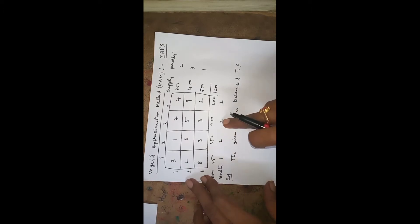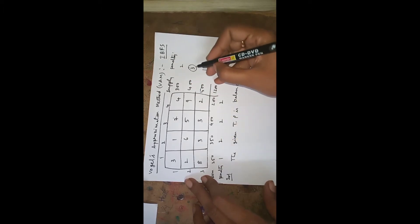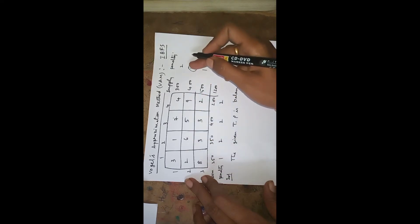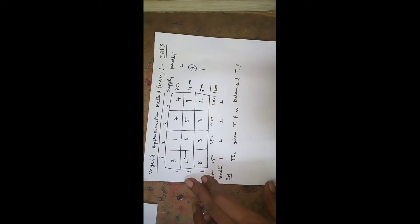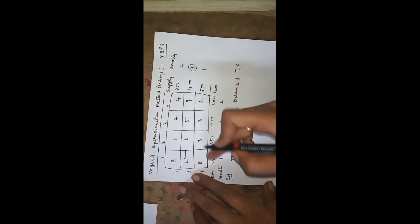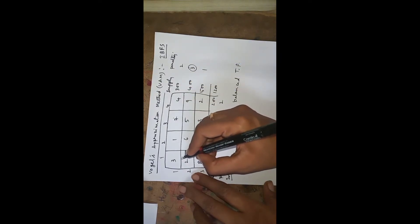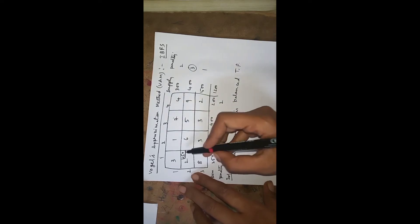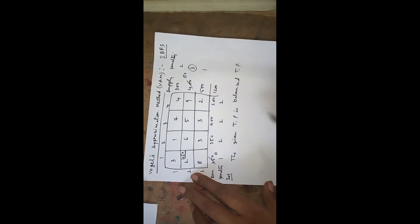After finding all the penalties, identify the highest penalty and circle it. The highest penalty is in the second row, so enter into the second row. In the second row the least cost element is 2, so put a box there. See the corresponding demand and supply: demand is 250, supply is 400. The minimum is 250, so allocate 250 here. We used 250; the remaining supply is 150.